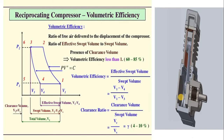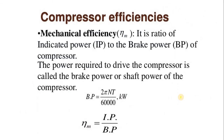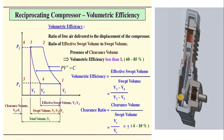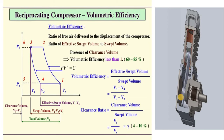Now we will discuss the rotary compressor. But before that, there are basically three efficiencies which are very essential while solving numericals. The first efficiency is mechanical efficiency, which is the ratio of the indicated power to the brake power, and brake power is calculated using the formula 2πNT/60,000 for the answer in kilowatt. The second is isothermal efficiency, which is the ratio of isothermal work input to the actual work input. The third important efficiency is volumetric efficiency, which is the ratio of effective swept volume to the swept volume. The clearance ratio — that is clearance volume to swept volume — is one important factor while calculating swept volume.